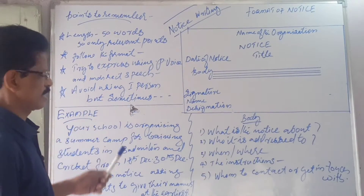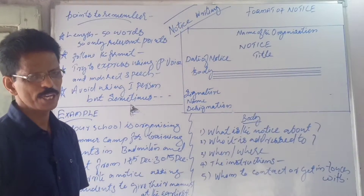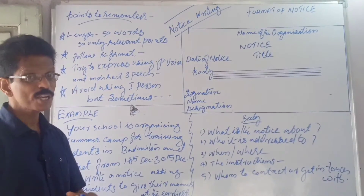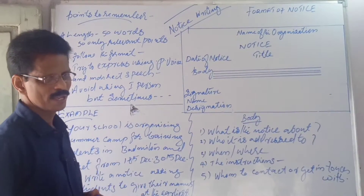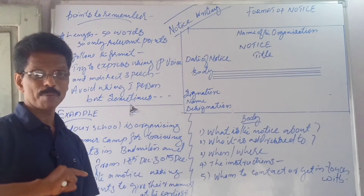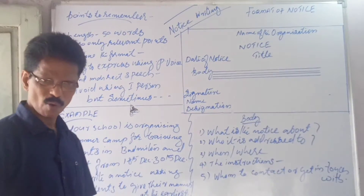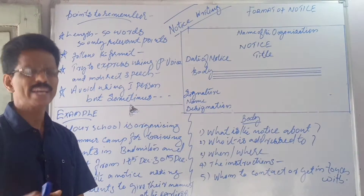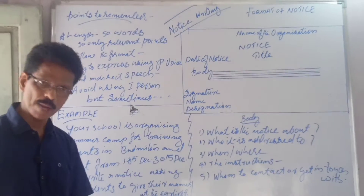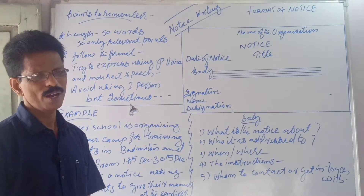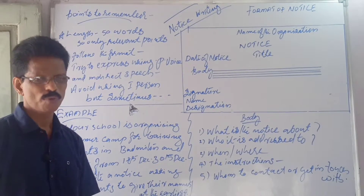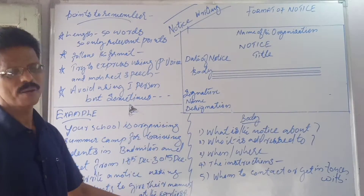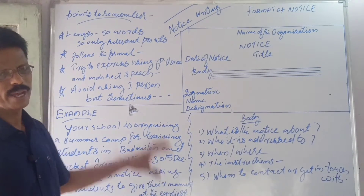Then, avoid using first person. Generally you will be asked to write a notice on behalf of your school or college. For example, a principal may write 'I do hereby inform all the students.' Even first person can appear, but on the examination point of view, you will be asked to write in third person. Don't write 'I' or 'we.' It is better to write in third person while writing a notice.